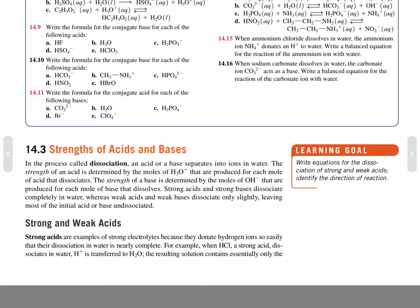The strength of an acid is determined by the moles of hydronium that are produced for each mole of acid that dissociates. The strength of a base is determined by the moles of hydroxide that are produced for each mole of base that dissolves. Strong acids and strong bases dissociate completely in water, whereas weak acids and weak bases dissociate only slightly, leaving most of the initial acid and base undissociated.